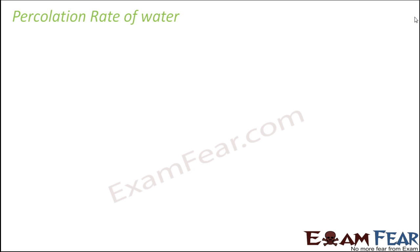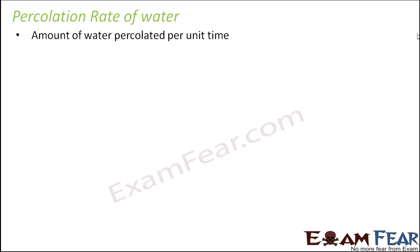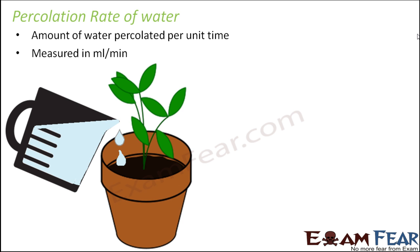Now that we understand what percolation is, the question is: what is the percolation rate of water? Rate is the speed of anything — the amount of water that gets percolated per unit time. Let us try to calculate the percolation rate using an example. Suppose you have taken 100 millilitres of water and put it into a flower pot.